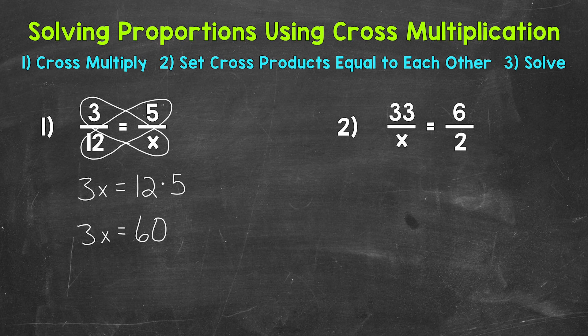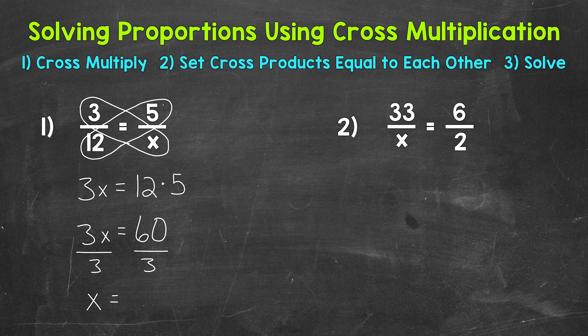So we have 3x equals 60. Now we have a one-step equation that we can solve to figure out what x equals. We need to isolate that variable of x — we do that by dividing both sides by 3. 3x divided by 3 gives us x, and 60 divided by 3 gives us 20.